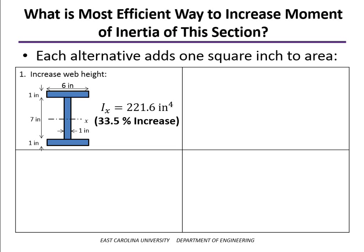Adding one square inch takes us from 13 to 14 square inches. We increase the area, or the weight of the beam, by about 5.5%, but increasing the height increases our moment of inertia a good bit more than that.